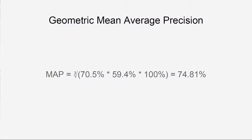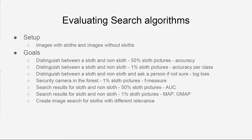Or we can use the geometric mean average, which is always lower than the arithmetic mean. If we want to penalize more for low scores, we would use the geometric mean. This metric is quite good for imbalanced classes.